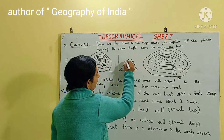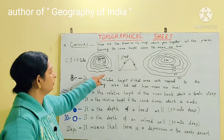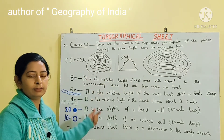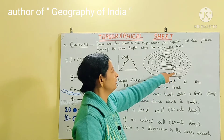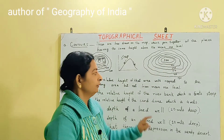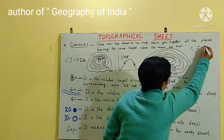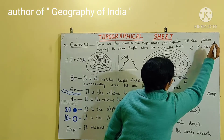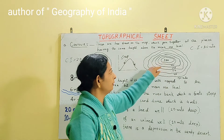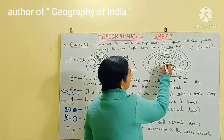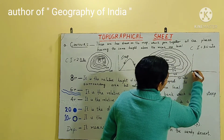When contour lines are very close to each other, the slope of the land is steep. In another example, contour values of 150, 180, 210, 240, 270, and 300 meters give a contour interval of 30 meters. Here the contour lines are a bit farther apart with regular spacing, and at the top they are far apart from each other.